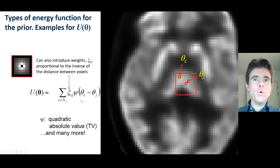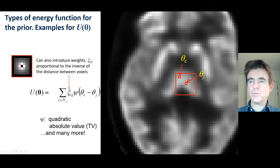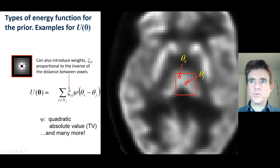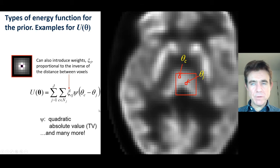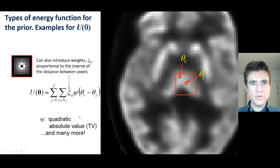We consider all of the pixels in the neighbourhood — in other words, pixel j gets compared with all the other pixels c that are members of the neighbourhood within that red square. Then we do that same process for every single centred pixel over the entire image.